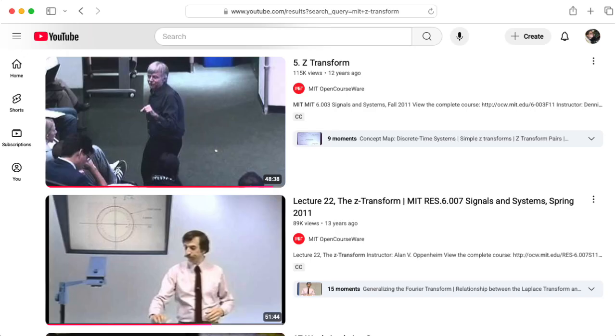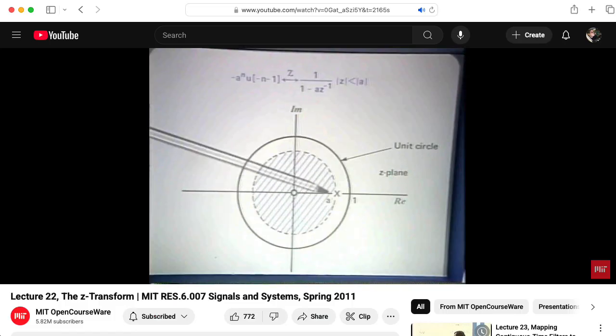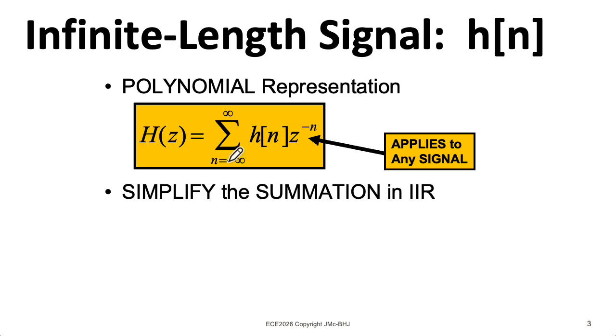These can get a little complicated. When you talk about bilateral transforms, you need to pay close attention to things called regions of convergence. In EC 2026, we generally restrict this lower limit to be zero. So we'll talk about impulse responses for causal systems, for instance.